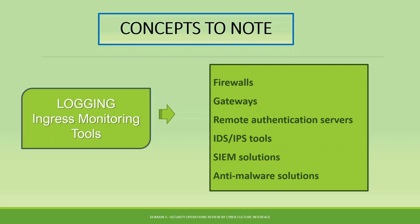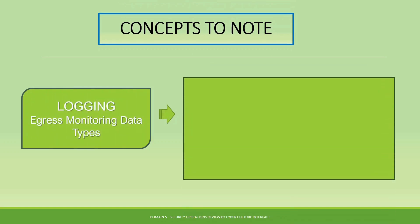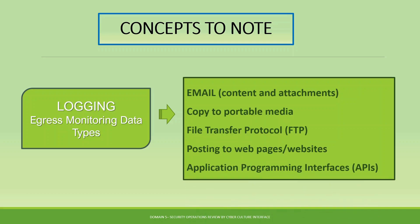Another concept under logging is egress monitoring data types. Egress refers to outgoing traffic. These are the data types going out of your device or network that are specially monitored. For example, when you are sending an email, it is monitored and logged in your system.